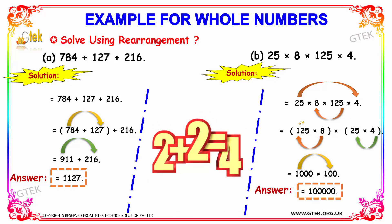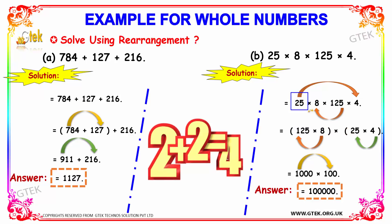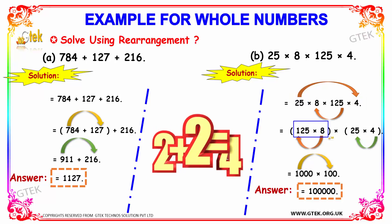We rearrange and first multiply 125 into 8, followed by 25 into 4. On multiplying 125 into 8 we get 1000, and on multiplying 25 into 4 we get 100.